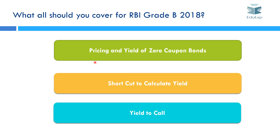Then you should study about pricing and yield of zero coupon bonds — zero coupon bonds are very important from the RBI perspective because questions on this have been asked both in 2016 and 2017. When you study bonds, you will find that it is very difficult to calculate yield with a calculator, and without a calculator it is near to impossible. However, you should be able to calculate yield with a shortcut formula which is available.